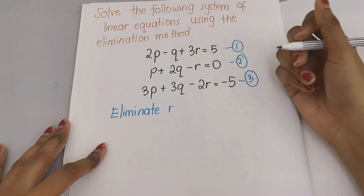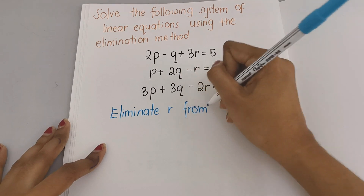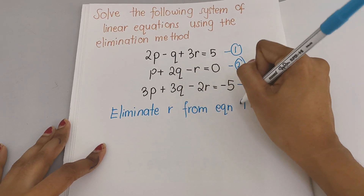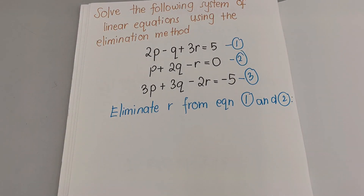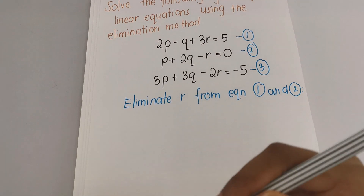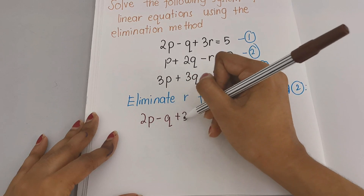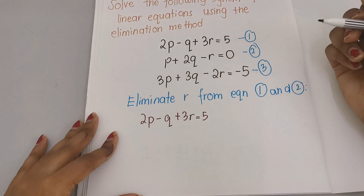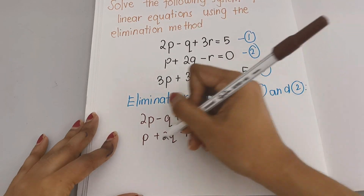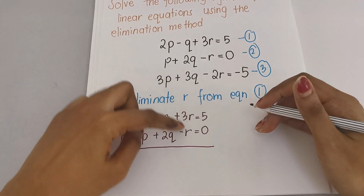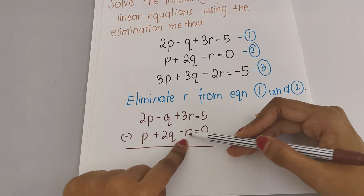To eliminate r, I'm first going to take equations 1 and 2. So: eliminate r from equations 1 and 2. I'm going to write equation 1: 2p minus q plus 3r equals 5, and equation 2: p plus 2q minus r equals 0.